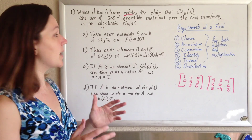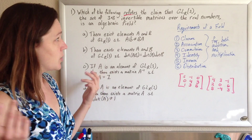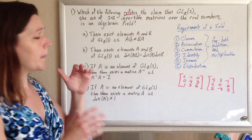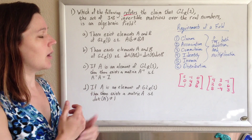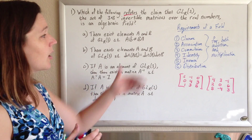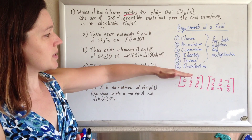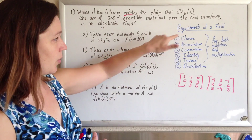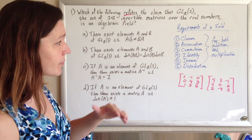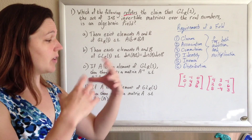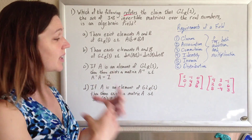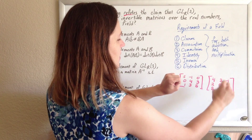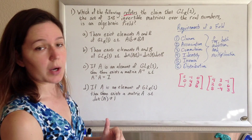Oh my gosh, why is this the first question? I've never learned about fields before — not in high school. But that's okay. You don't need to know much for this particular test. All you need to know are the requirements of a field, and I've got a worksheet on that and another problem that covers going down the checklist for these. So, if you're a field, you're a set of numbers — or in this case a set of matrices — where addition and multiplication satisfy all these properties.